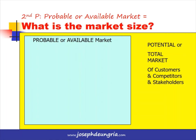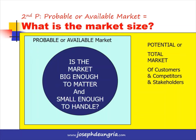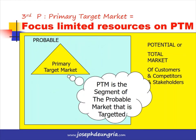We should be sure that the market size for the probable or available market is big enough to matter and small enough to handle. The third P is the Primary target market — a subset of the probable market representing which part should be targeted by the company. Why select a portion and not go for the entire probable market? Because the company's resources are limited, and it's best to focus those resources on the primary target market.